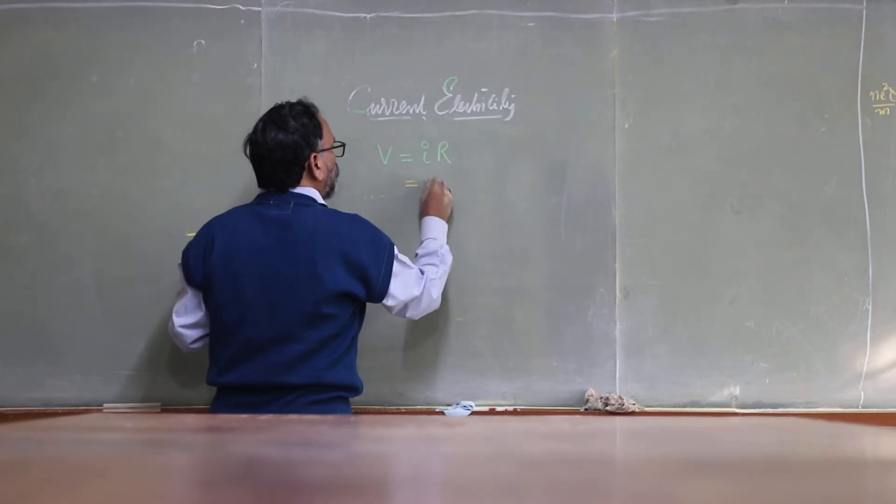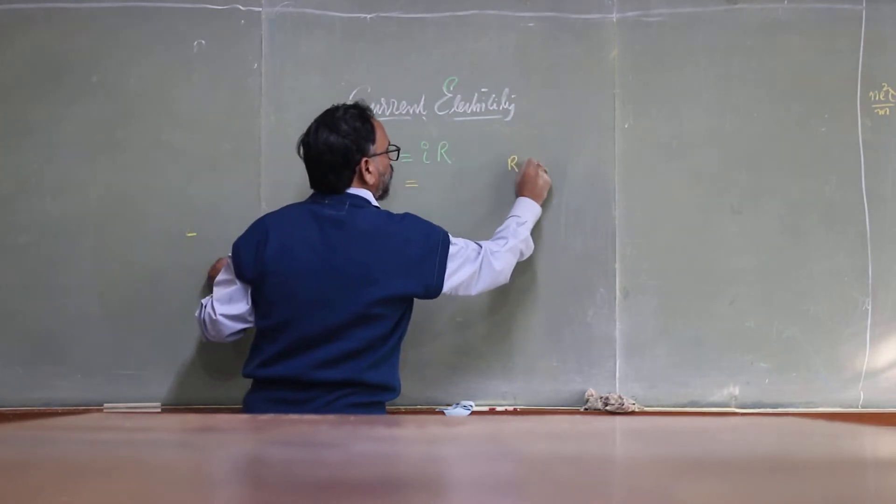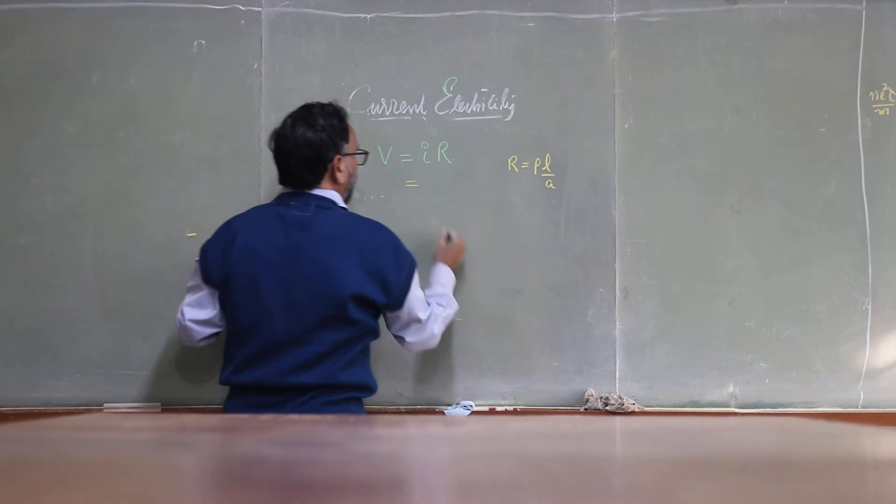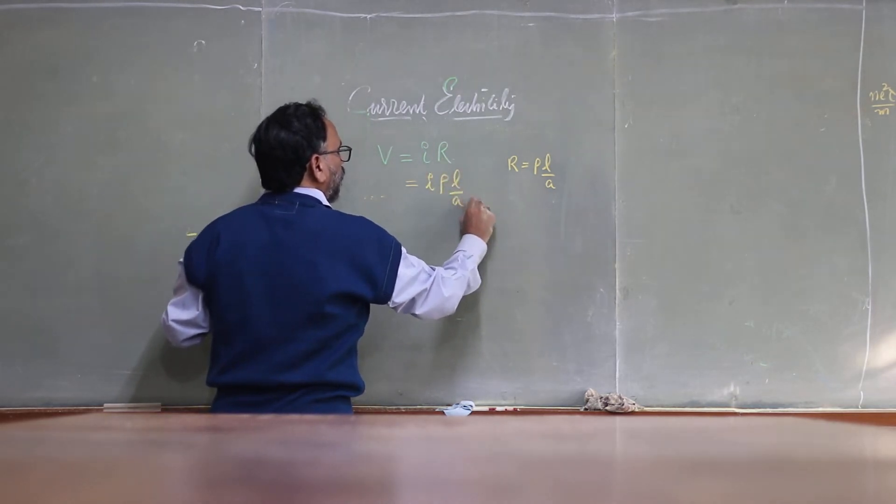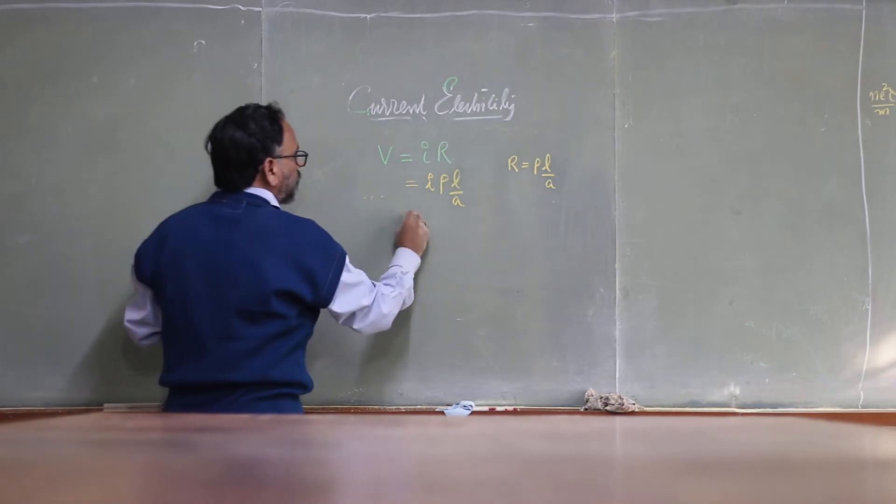And we also know that R equals ρ L by A. So V equals I times ρ L by A. Now if you look at this, I,